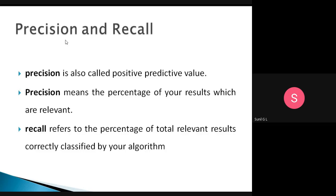Precision is also called Positive Predictive Value. It is the percentage of your results which are relevant — how much you are predicting correctly. Recall refers to the percentage of total relevant results correctly classified by your algorithm. For example, if there are 20 items and 50% are relevant, recall measures how much of those relevant items your algorithm correctly classifies.